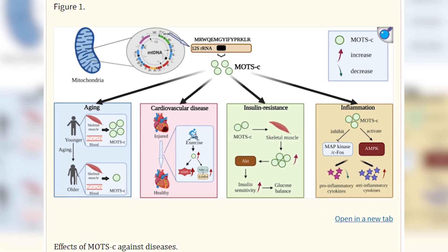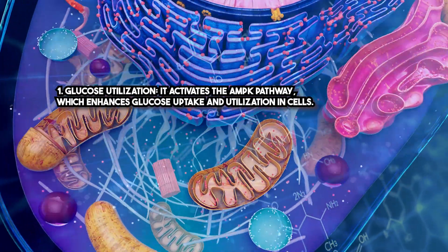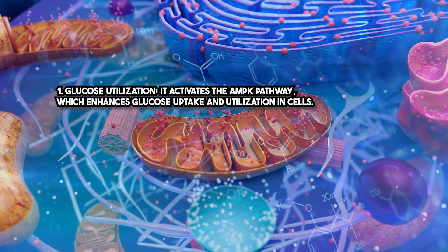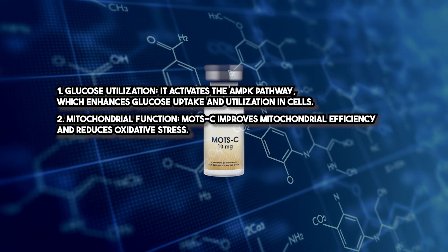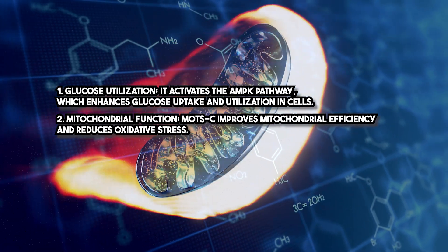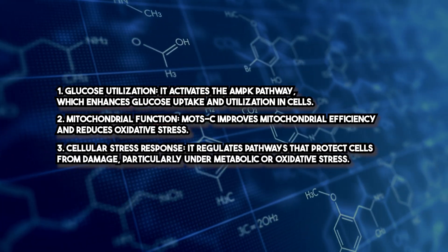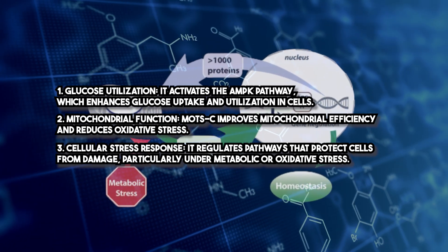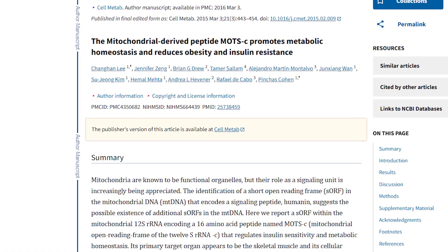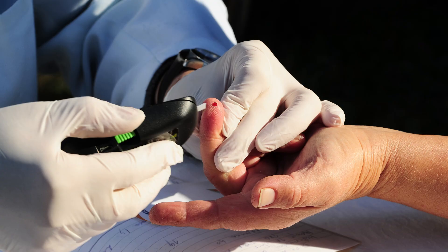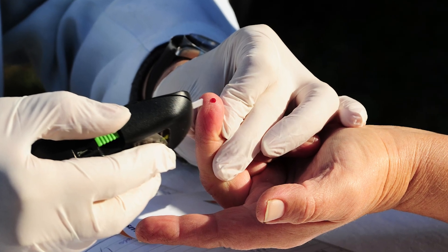MOTSC works by directly influencing metabolic and stress response pathways. For glucose utilization, it activates the AMPK pathway, which enhances glucose uptake and utilization in cells. For mitochondrial function, MOTSC improves mitochondrial efficiency and reduces oxidative stress. For cellular stress response, it regulates pathways that protect cells from damage, particularly under metabolic or oxidative stress. Studies published in Cell Metabolism demonstrate that MOTSC improves glucose homeostasis and reverses insulin resistance in preclinical models.